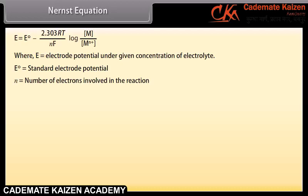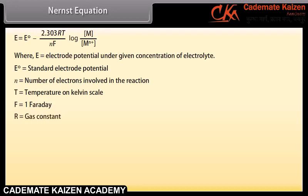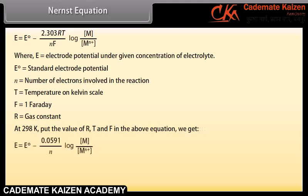Electrochemical series: By taking the standard electrode potential of the hydrogen electrode as zero, standard electrode potentials of a large number of electrodes have been determined. When various electrodes are arranged in order of increasing or decreasing values of their standard reduction potentials, we get a series called the electrochemical series.